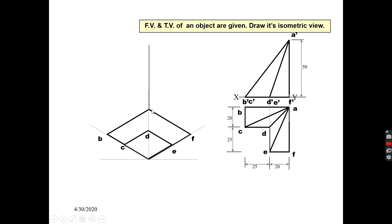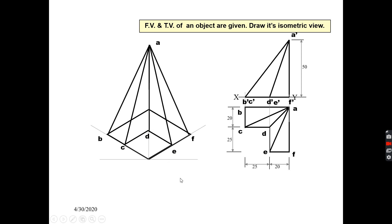From this point, you can draw a line of 10mm and mark point A. From point A, you can join all the points — point B, point C, point D, point F, and point E. After drawing the isometric projection, the part which is not visible to you has to be removed. That hidden portion you cannot see, so it must be removed from the drawing.